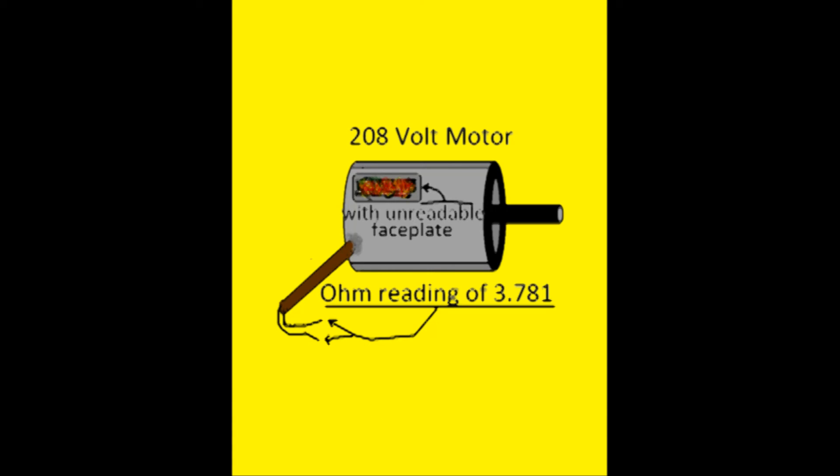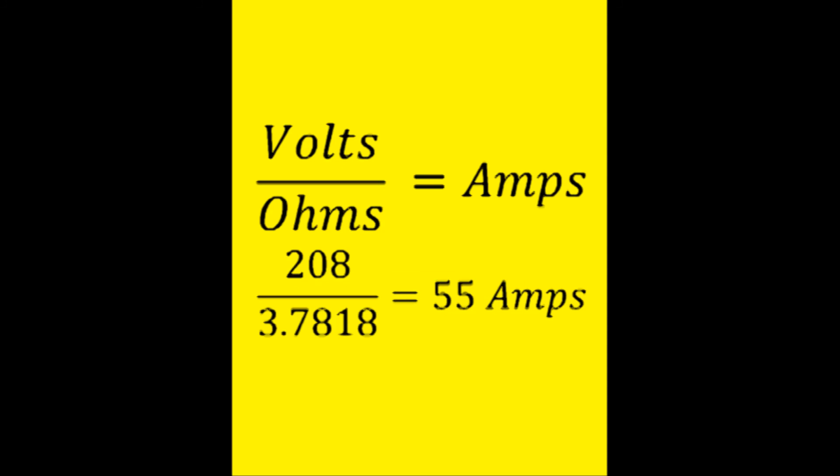Looking at the motor, you can test for ohms using the ends of the feed wires. So for now we're assuming that the voltage supply is 208 volts. You have 208 volts divided by 3.7818 ohms, which gives you a real-time amperage draw of 55 amps.